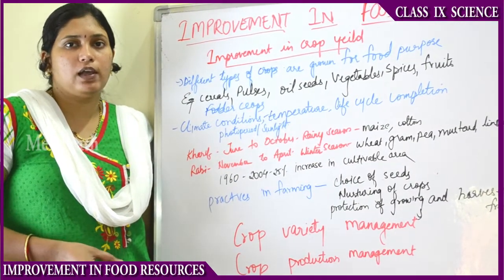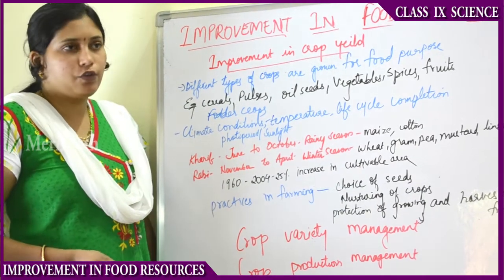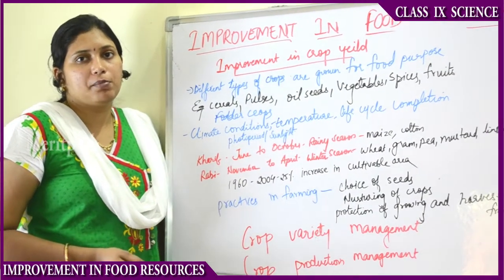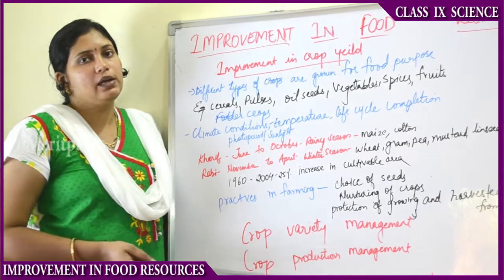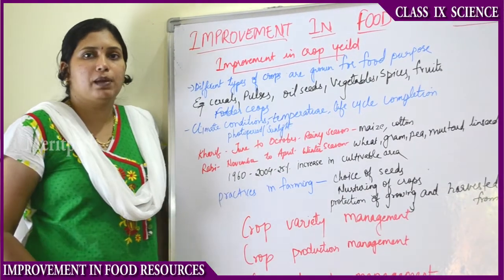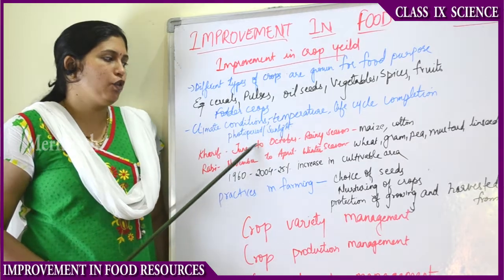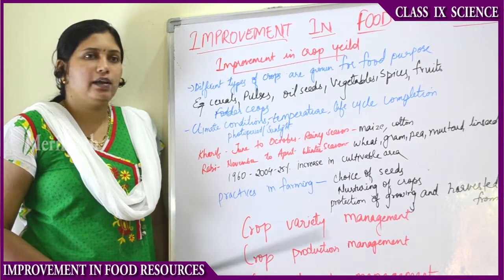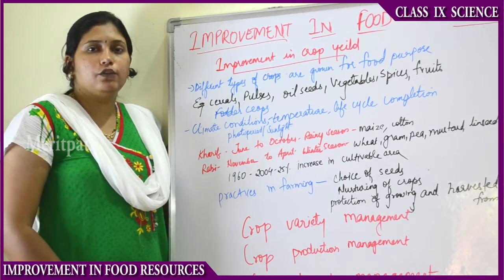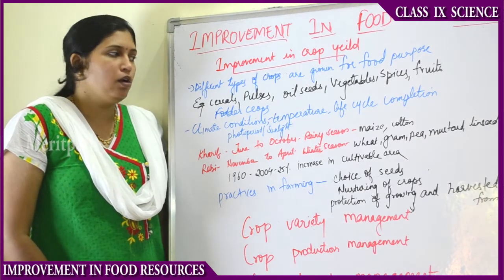Nowadays farmers select short life cycle plants - within four months the plants can be harvested. That way the farmer will have more yield and his income will also increase. So life cycle completion is important. Photoperiod, or sunlight, is also important because photosynthetic activity is carried out by plants only in the presence of sunlight.